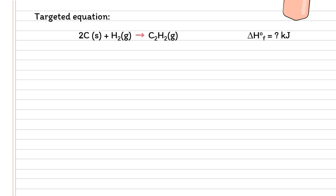For any chosen method, we still need to have the targeted equation. From the question, we don't have any targeted equation yet, so we need to create one. They ask to calculate the delta H of formations for C2H2, meaning we need to form 1 mole of C2H2 from its most stable states of elements — carbon in solid state and hydrogen in gas state — to give C2H2 in gas state.